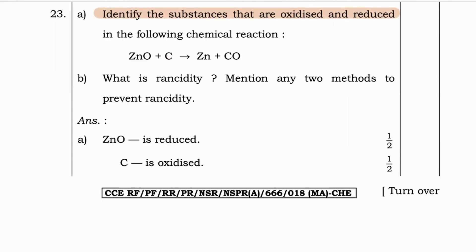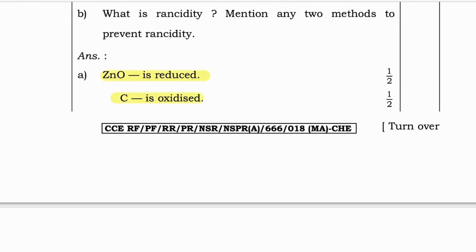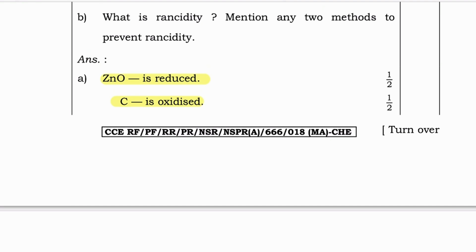Chemistry three marks questions with answers. Identify the substances that are oxidized and reduced in the following chemical reaction: ZnO + C → Zn + CO. Here ZnO is reduced and C is oxidized. Next: What is rancidity? Mention any two methods to prevent rancidity.